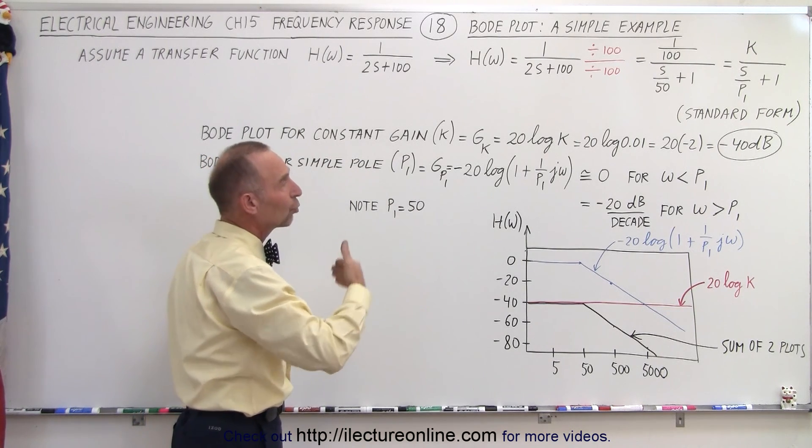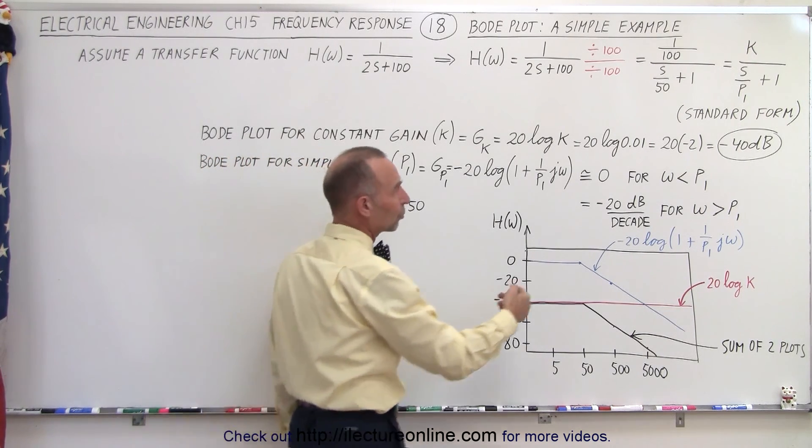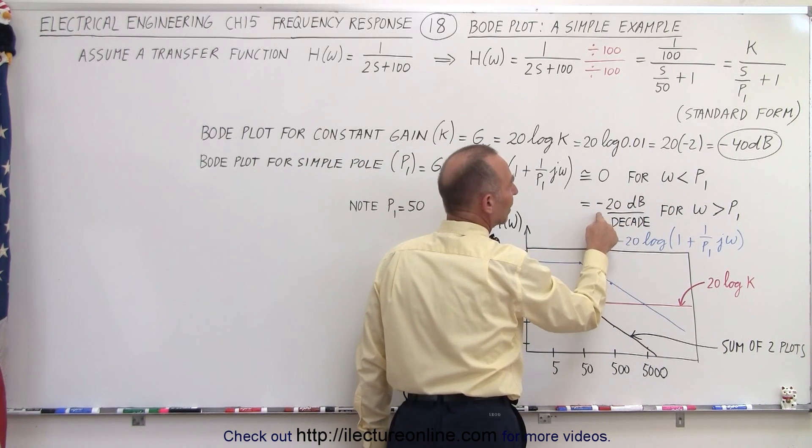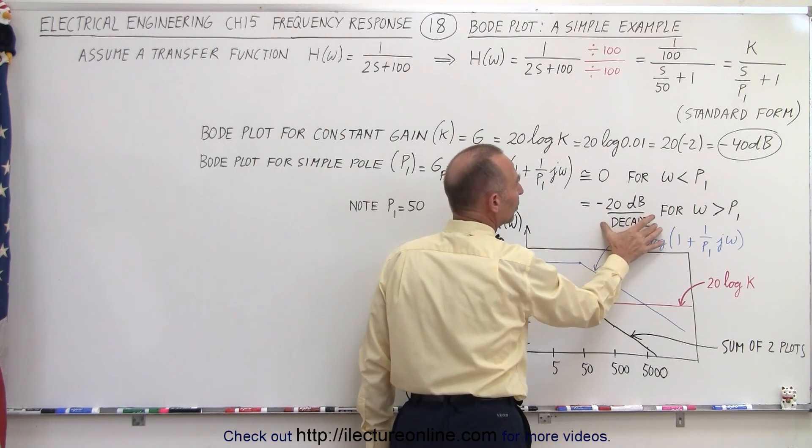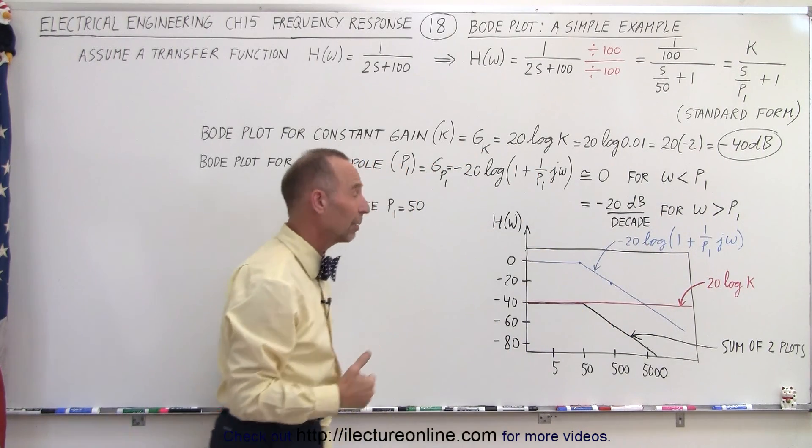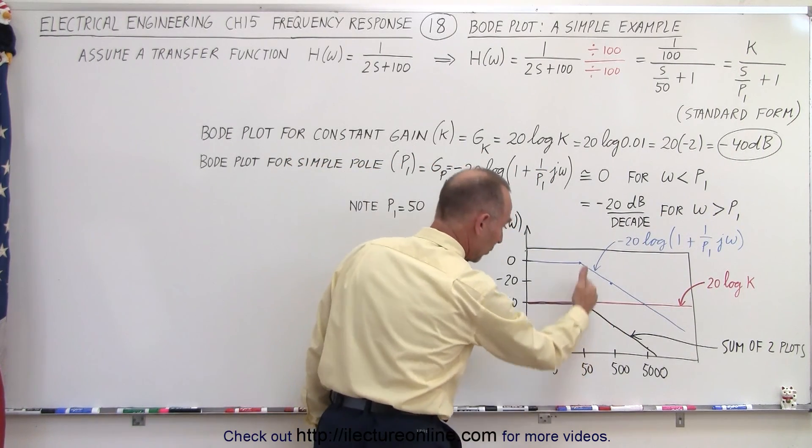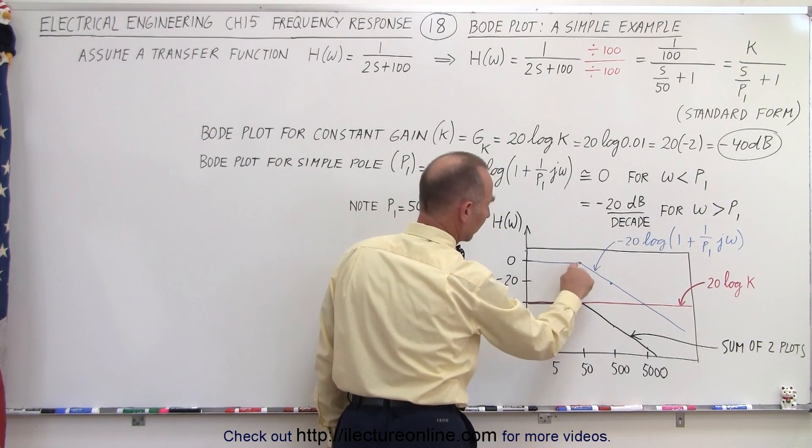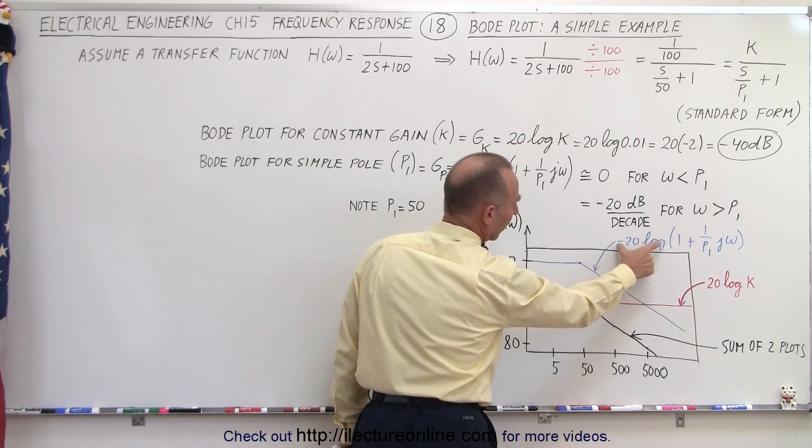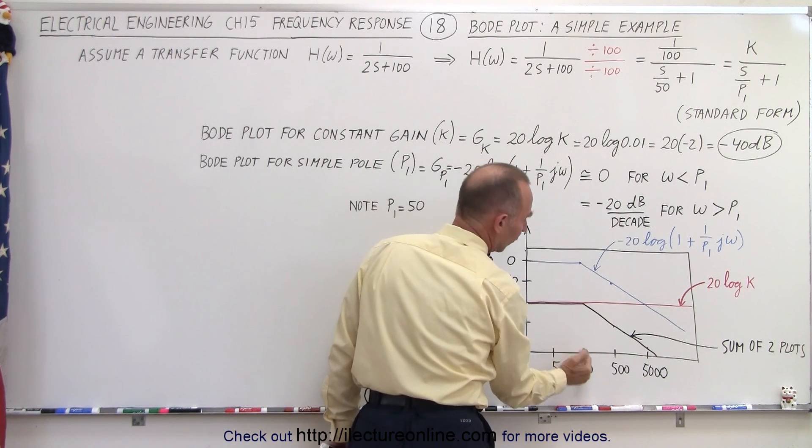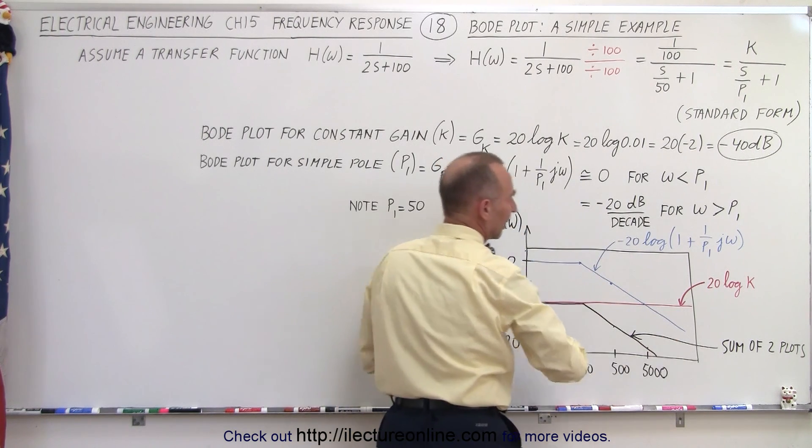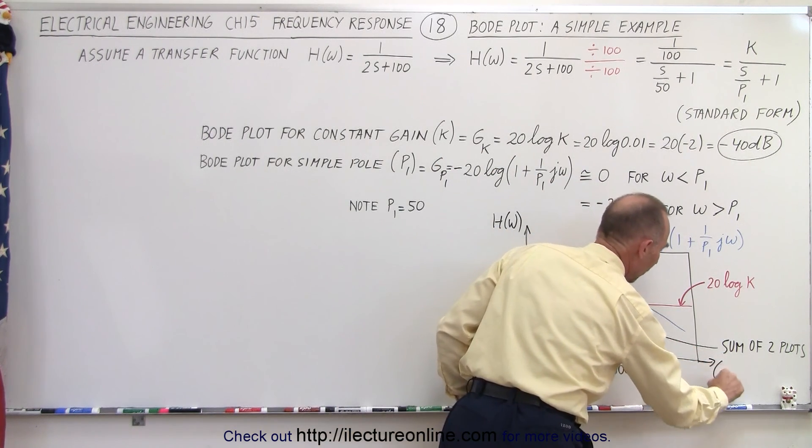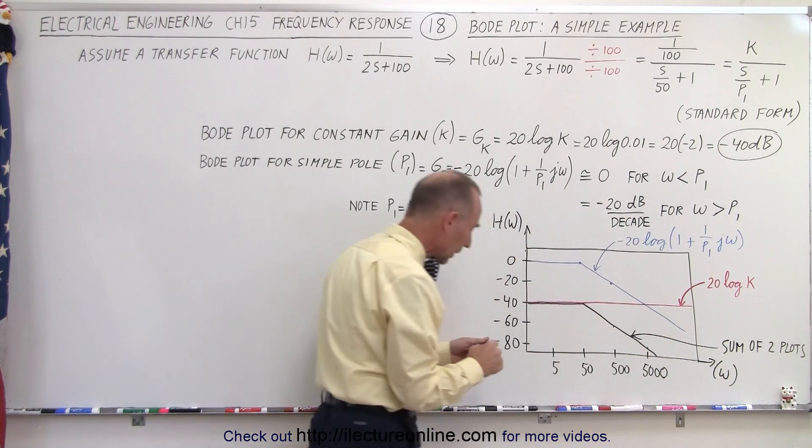But then for values greater than P1 if omega becomes greater P1 we then have a negative slope of minus 20 dB per decade for any values where omega is greater than P1. So we find the value of P1 at 50 and then we realize we have a negative slope. Right here. Negative slope for values of omega that are greater than 50. So here is the omega. All right.